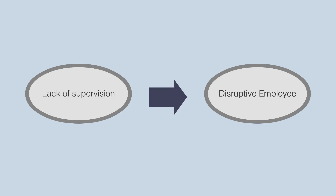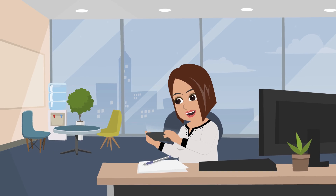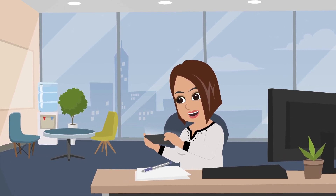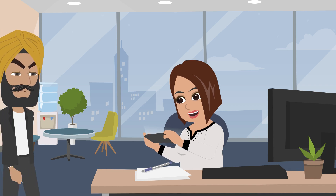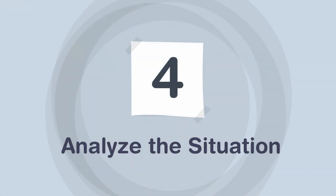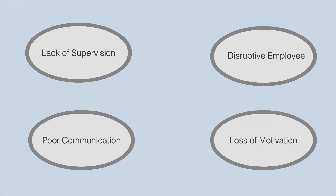Make connections between the causes. Once the factors at play are identified, observe if they influence each other. Draw arrows to indicate the causes that affect others. For instance, a lack of supervision by managers can lead some employees to adopt disrespectful behaviors, which can impact team productivity.